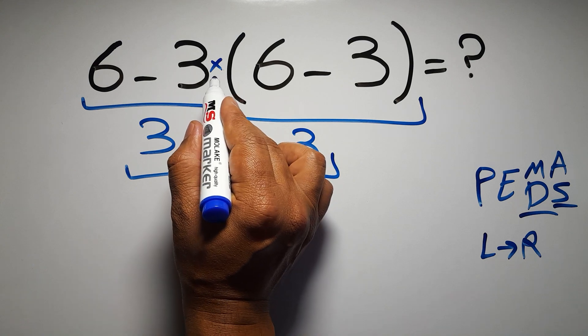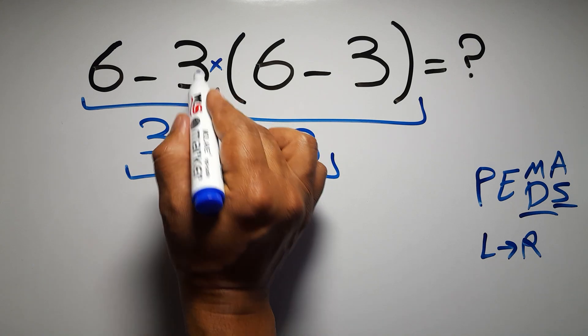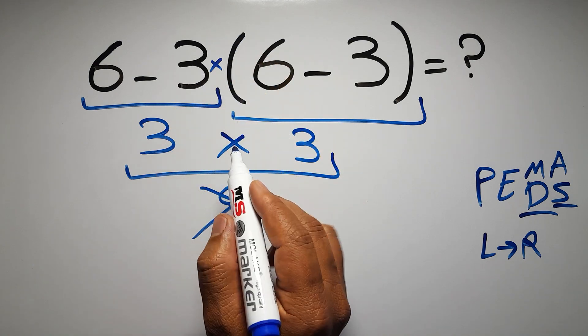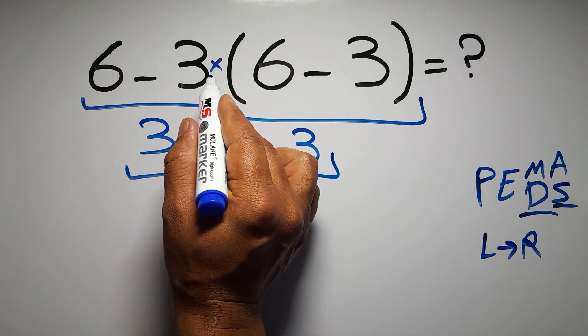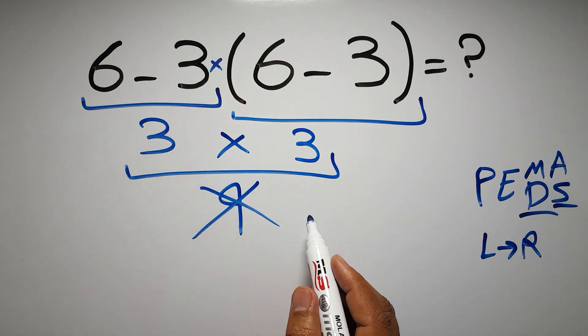Here we have a multiplication, because in mathematics, when a number is placed next to parentheses, it means multiplication, and we usually don't write the multiplication sign for brevity.